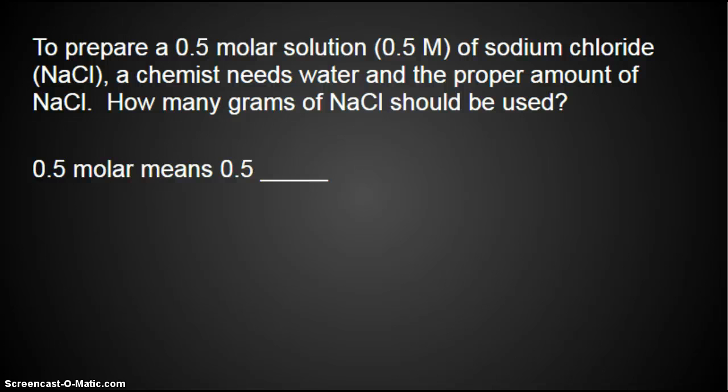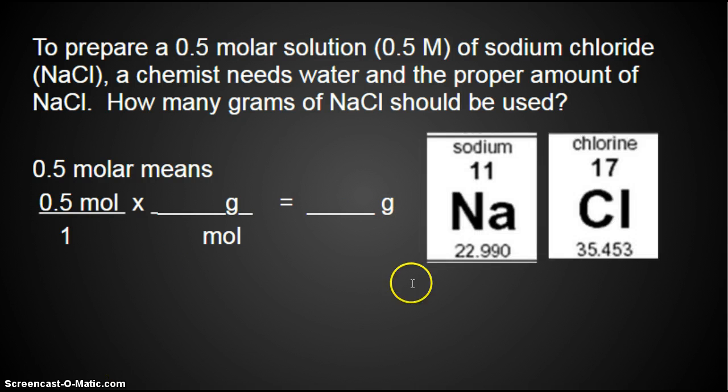How many grams of NaCl should be used to get a 0.5 molar solution of sodium chloride? 0.5 molar means we have 0.5 moles of solute in 1 liter. 0.5 moles, moles goes on the bottom of my next fraction. What am I looking for? Grams. Look on your periodic table. What's the molar mass of NaCl? 58.44. Put it in your calculator, 0.5 times 58.44, and you get 29.22 grams.